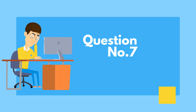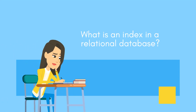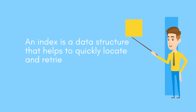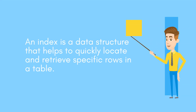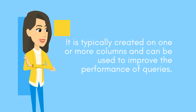Question number seven: What is an index in a relational database? An index is a data structure that helps to quickly locate and retrieve specific rows in a table. It is typically created on one or more columns and can be used to improve the performance of queries.